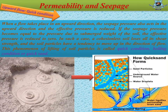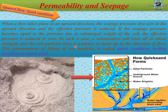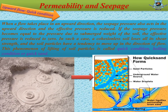Upward flow. Quick condition: when a flow takes place in an upward direction, the seepage pressure also acts in the upward direction and the effective pressure is reduced. When seepage pressure and the submerged weight of the soil become equal, the effective pressure will be zero. In such a case, cohesionless soil loses its shear strength and the soil particles have a tendency to move up in the direction of flow. This phenomenon of lifting of soil particles is called quick condition, boiling condition, or quicksand. When quicksand develops, the soil will behave like bubbling from the ground. As in quick condition, upward water pressure and submerged weight of soil become equal, sand particles will have no shear or bond strength and will not be able to carry any load.